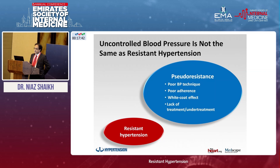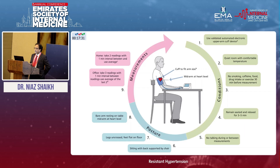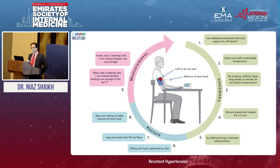When we talk about poor technique, if you go through the guidelines, it is so important to correctly label a person as hypertensive. There are certain set parameters before you label your patient as hypertensive. The instrument has to be properly calibrated, cuff size and position of the patient are very important. The environment in which blood pressure is being taken is also very important.